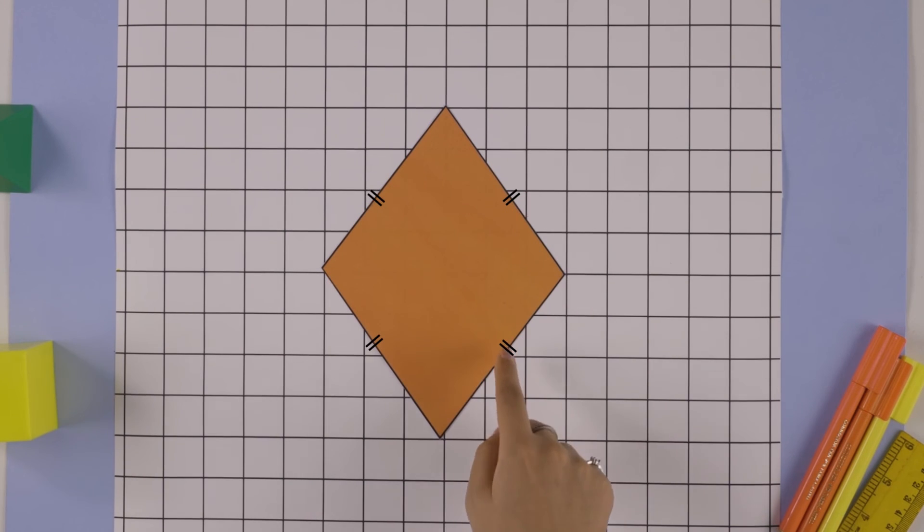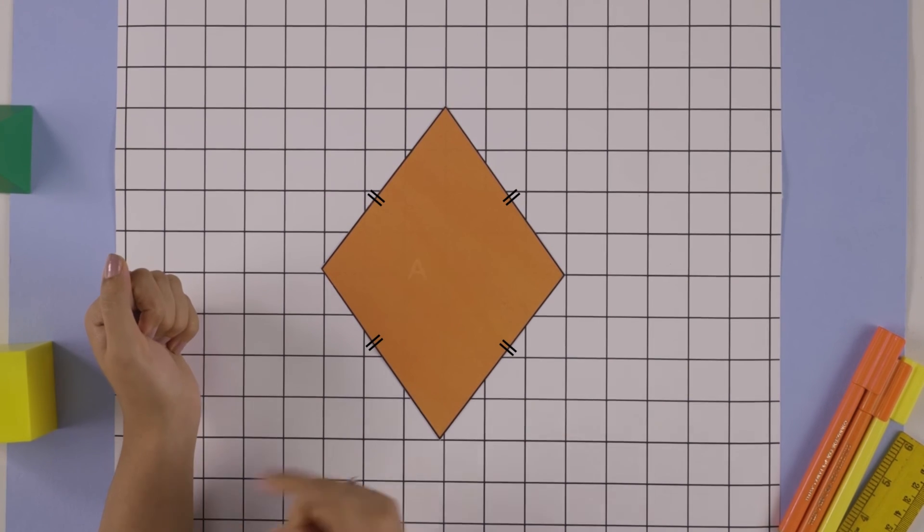How about this parallelogram with all sides equal? It's called a rhombus. Can you find a way to calculate its area? Let us know in the comments.